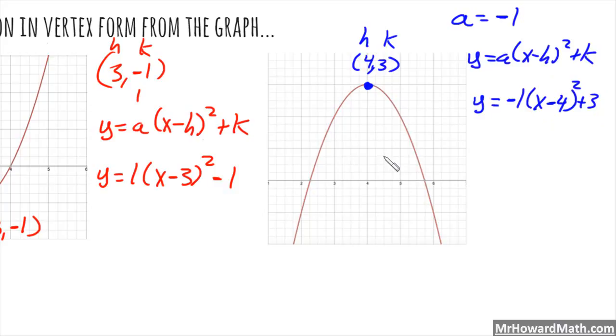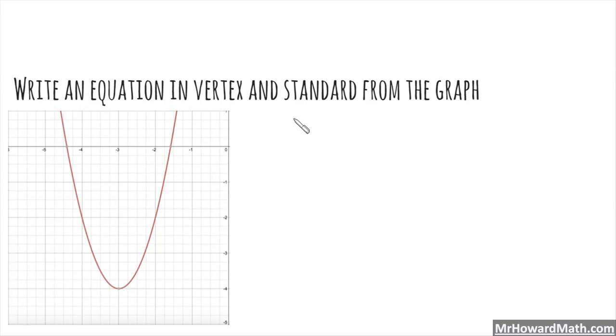So let's look at another example. Last example: write an equation in vertex and standard form from the graph. So we identify the vertex first. Vertex is right here. It is negative 3 comma negative 4. That's this value right here. So that's h and k. Now we know that h comma k is negative 3, negative 4.